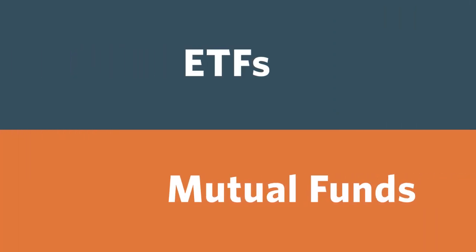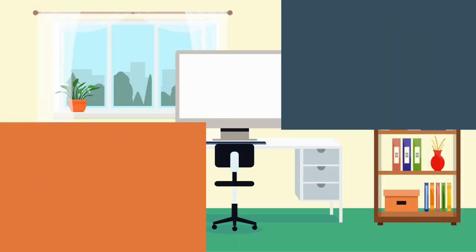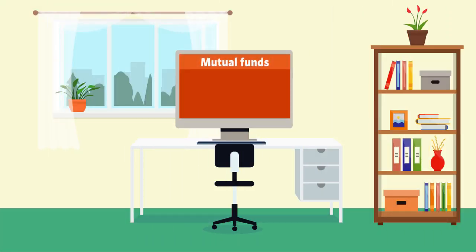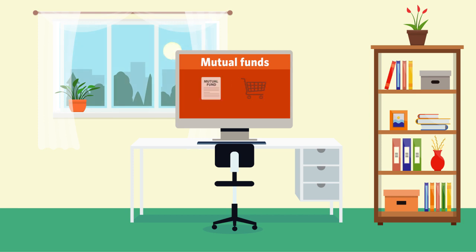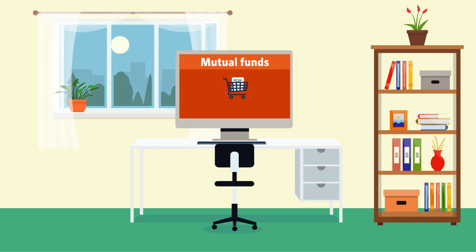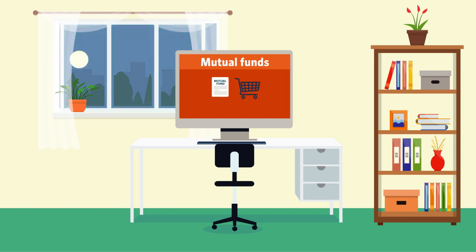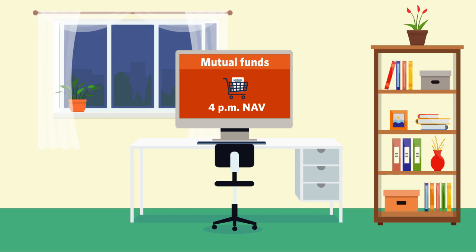This is where ETFs and mutual funds start to differ. If you're buying a mutual fund, you buy it at one price — its upcoming 4 p.m. NAV. You can submit the order at any time during the trading day, but no matter when you order, the price you will pay is the net asset value that the fund posts at 4 p.m.